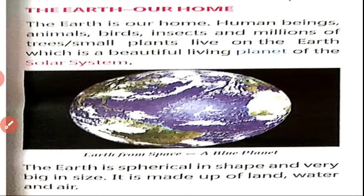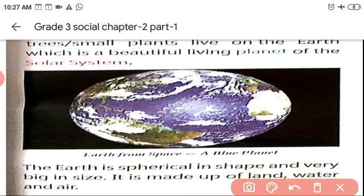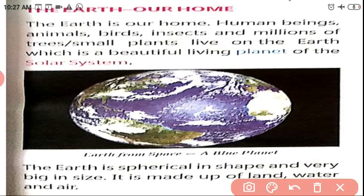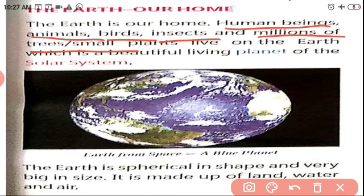This is the model of our earth, which is a common home for all living beings. Earth is our home. What are all the living beings present on earth? Human beings, animals, birds, insects, and millions of trees and small plants live on the earth. The special thing about our earth is that it is the one and only living planet where living beings can survive.